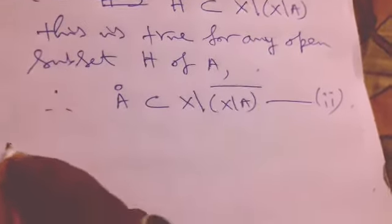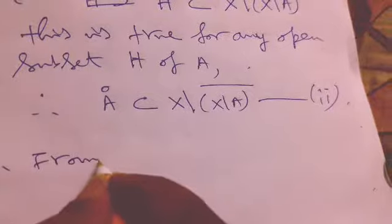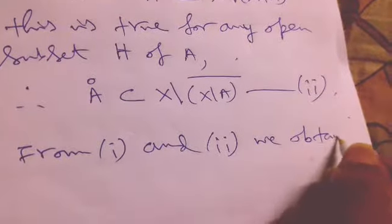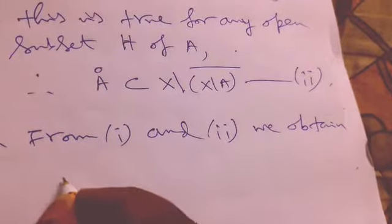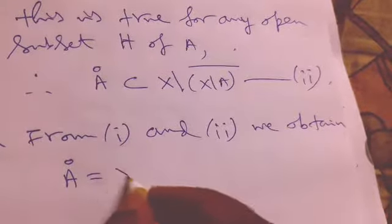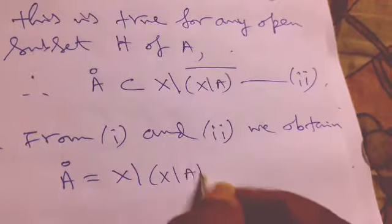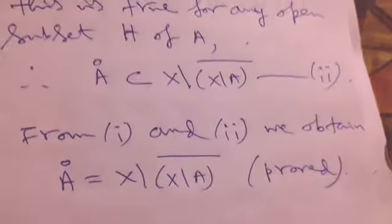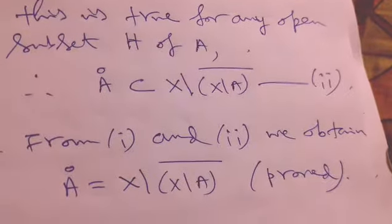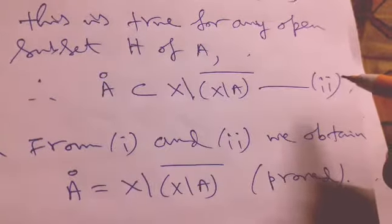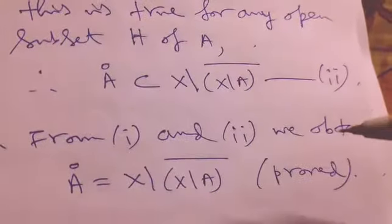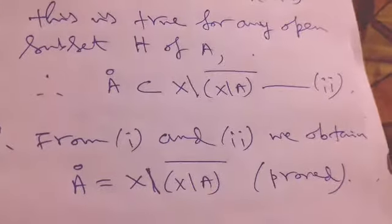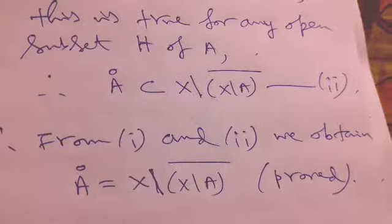Therefore, from equations 1 and 2, we obtain that the interior of A is equal to X minus (X minus A-whole-bar). Hence the proof. This is our result — from condition 1 and condition 2 together, you get this result. In this way we finished our discussion today. If you like this video, like it, share it, don't forget to subscribe the channel. Thanks for watching.